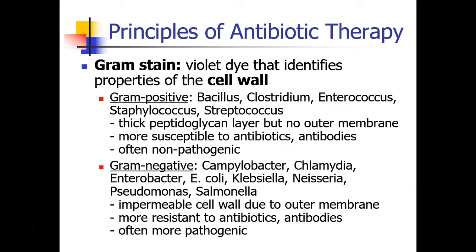The Gram negative bacteria include Campylobacter, Chlamydia, Enterobacter, E. coli, Klebsiella, Neisseria, Pseudomonas, and Salmonella. These bacteria have an impermeable cell wall due to the outer membrane, and they tend to be more resistant to antibiotics and antibodies, and are often more pathogenic.